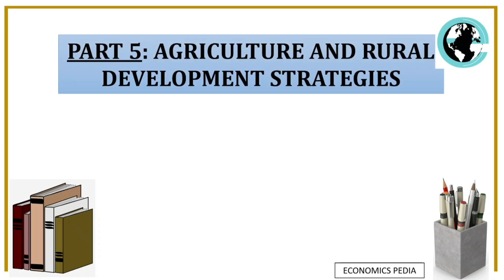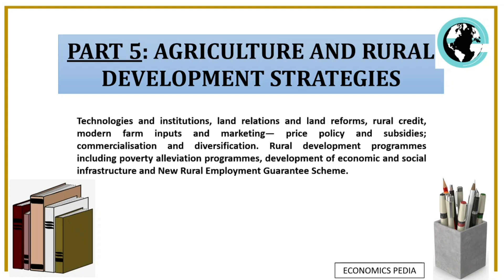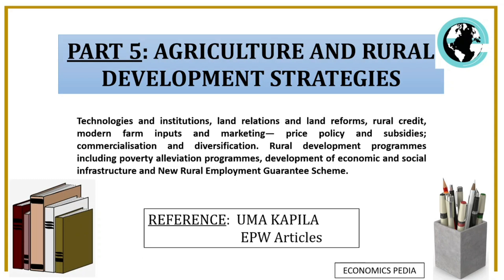Part 5 is Agriculture and Rural Development Strategies. Sub-topics include land relations and land reform, improvements in rural credit, rural development programs including poverty alleviation, economic and social infrastructure, and the new rural employment guarantee scheme. The reference for the agricultural part is Uma Kapila. For rural development and strategies, you need to follow EPW — Economic and Political Weekly — articles.